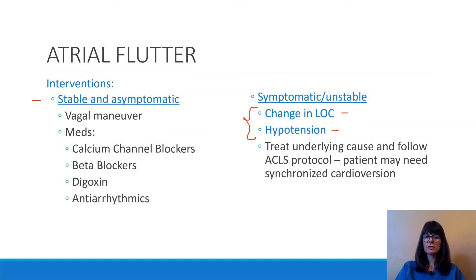If the patient is symptomatic and unstable — again, with a change in level of consciousness or systolic blood pressure less than 90 — we need to treat the underlying cause and follow advanced cardiac life support protocol, which means the patient might need synchronized cardioversion. I will be discussing synchronized cardioversion and comparing it to defibrillation in a different video.